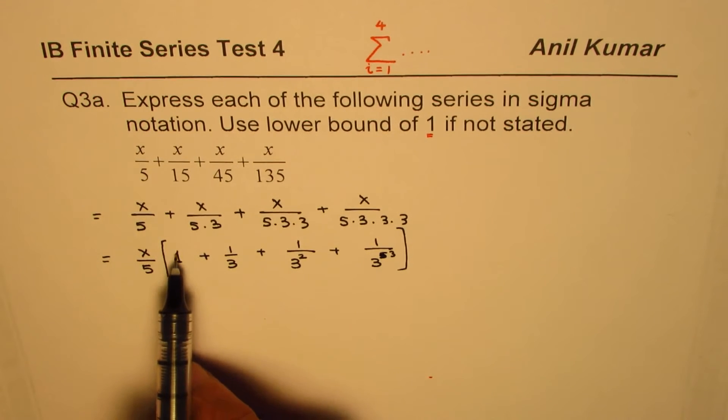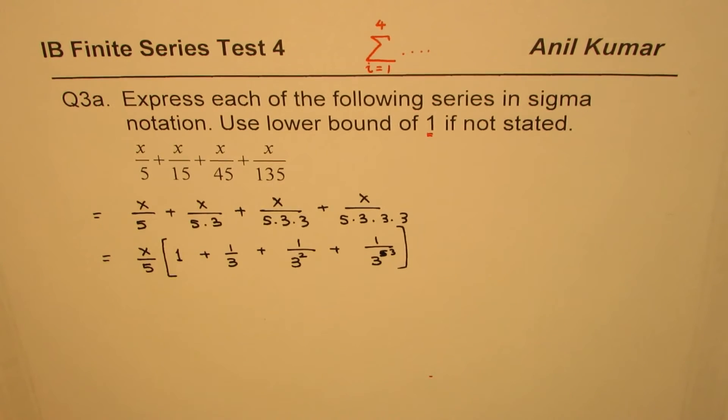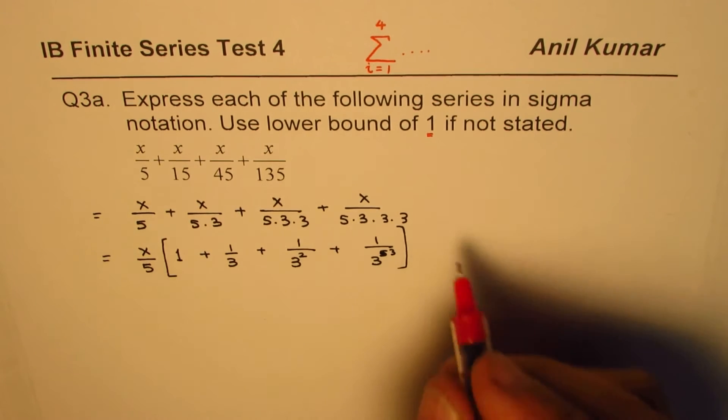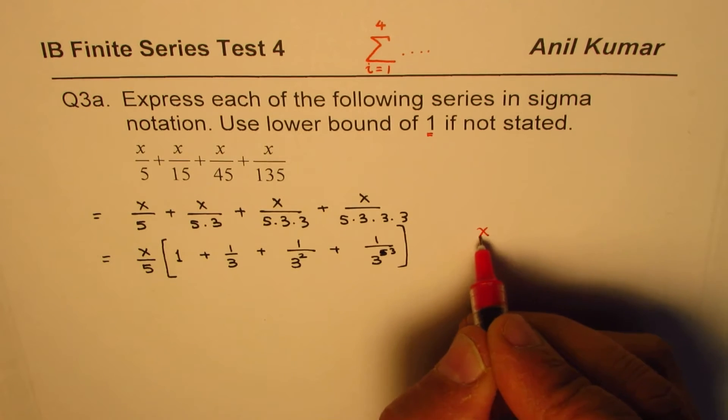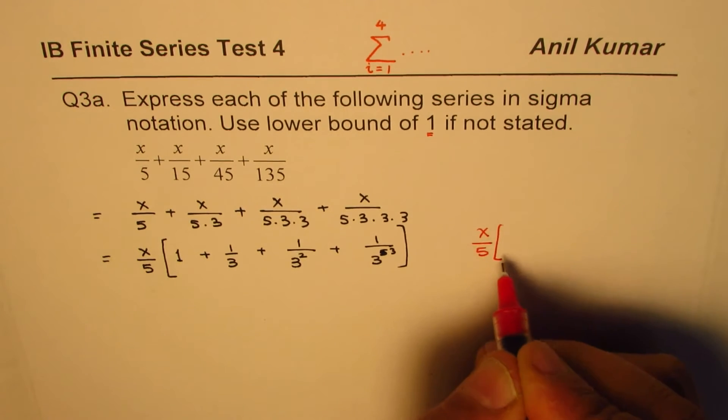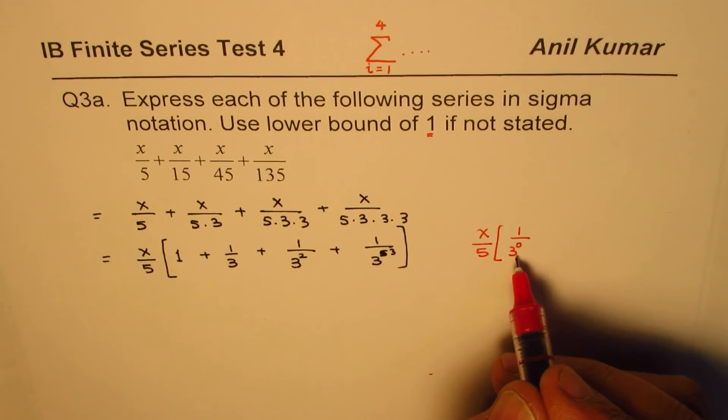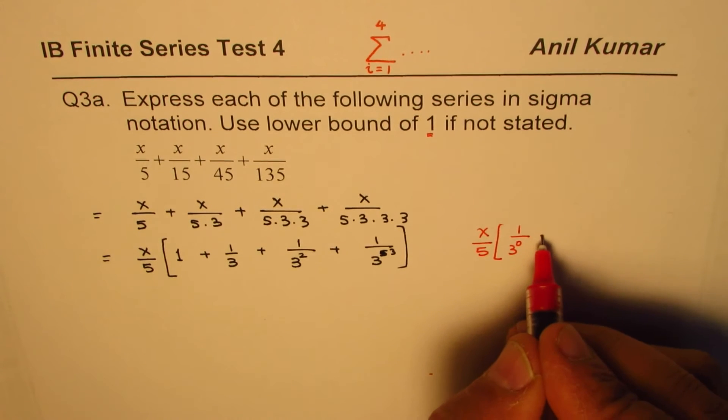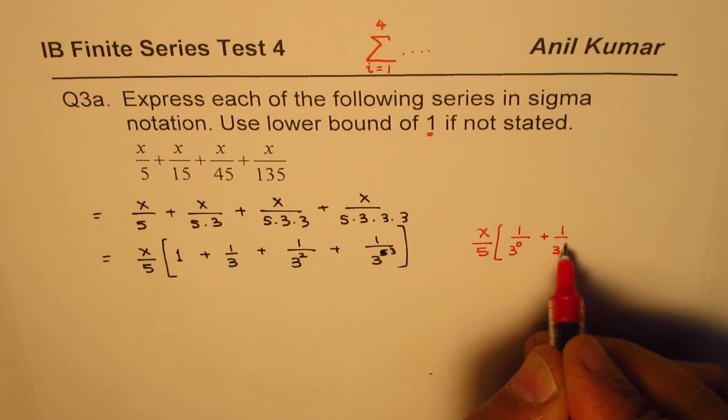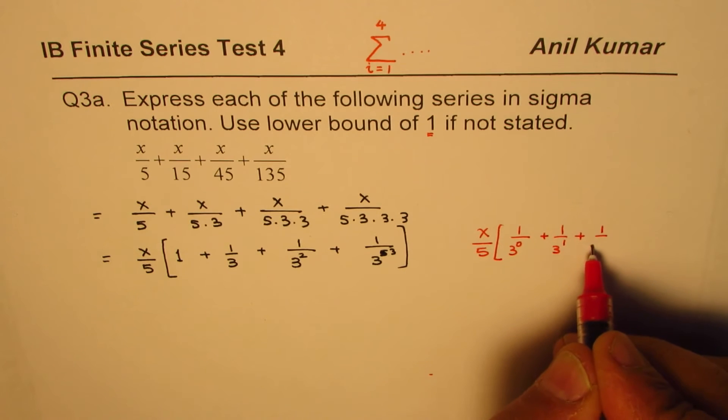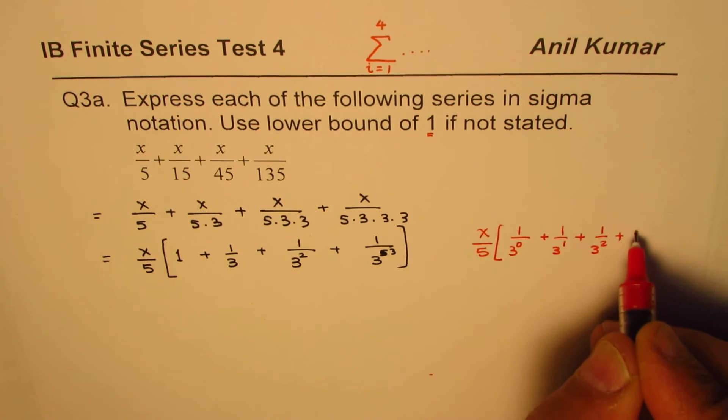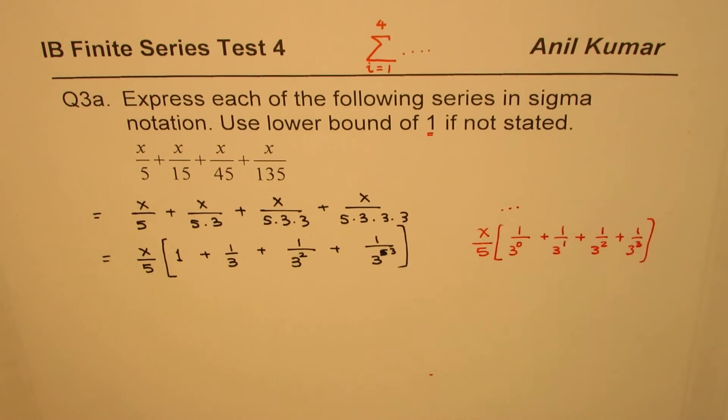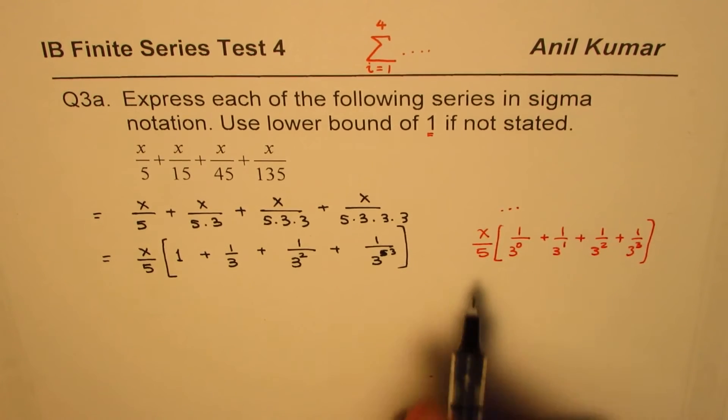Now, the first term is 1 over 1. You can think about it like this: you could think like this term to be kind of 1 over 3 to the power of 0. Anything to the power of 0 is 1, so you get 1 only. Then the next term is 3 to the power of 1, and then the next term is 3 to the power of 2, and the fourth term is 3 cube. So based on our thinking, we can now write in sigma notation.